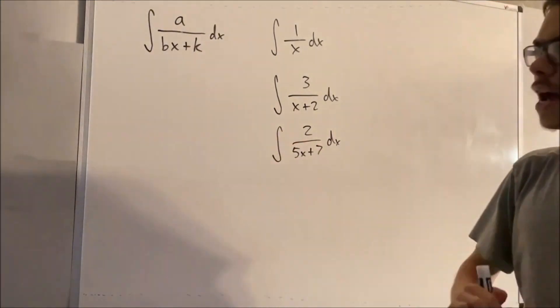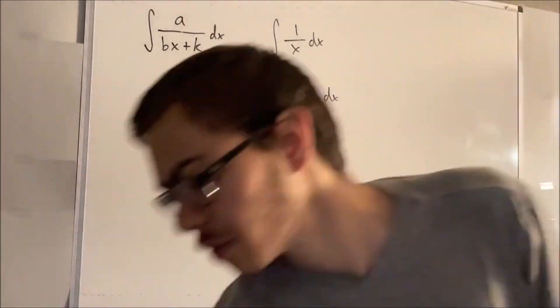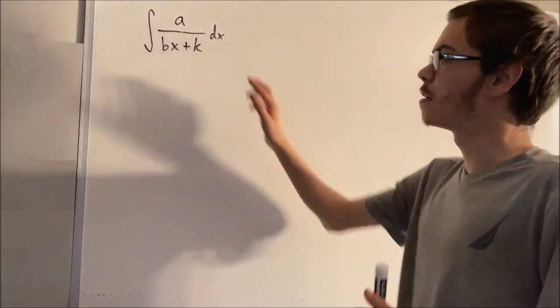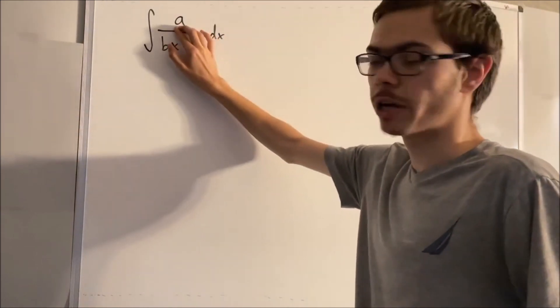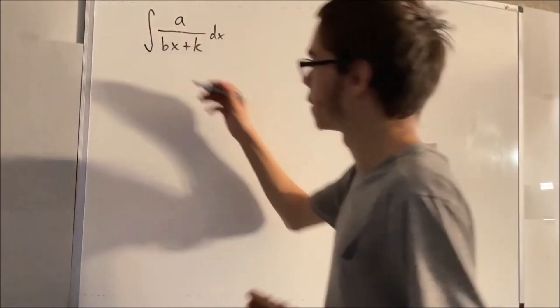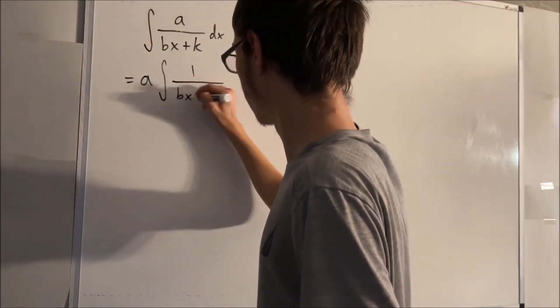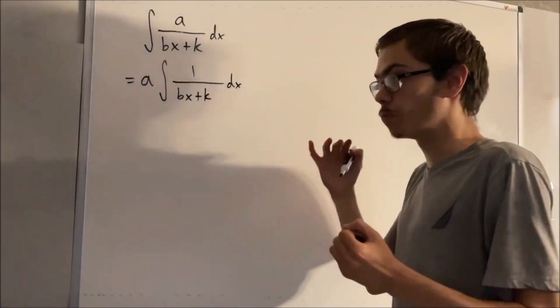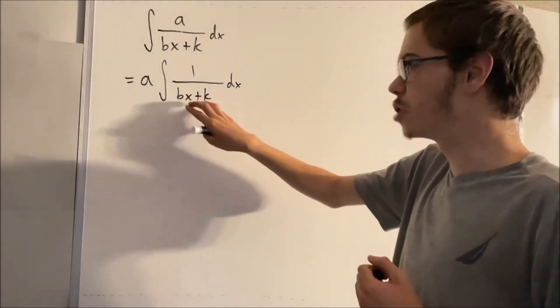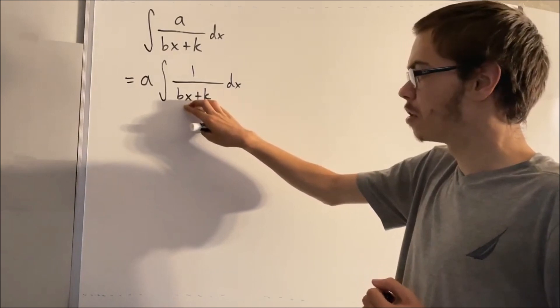So how do we actually evaluate this integral? What we should do first is move the constant in the numerator out to the outside of the integral. So let's do that first. So now all we have to do is deal with what we have in the denominator. So what should we do with this stuff?